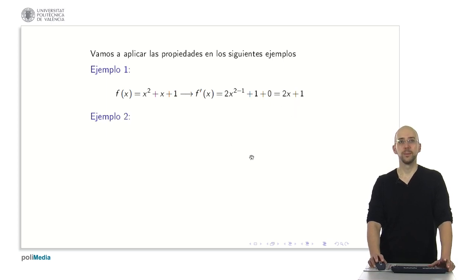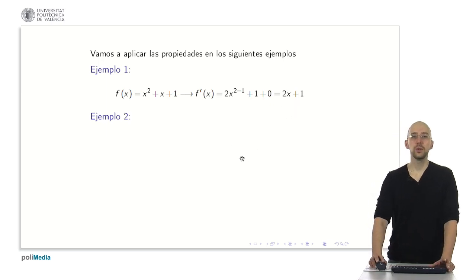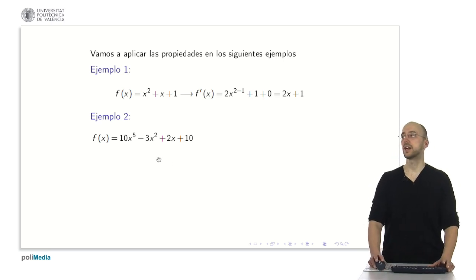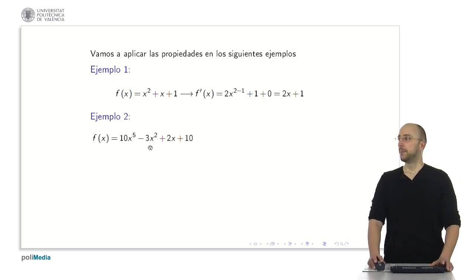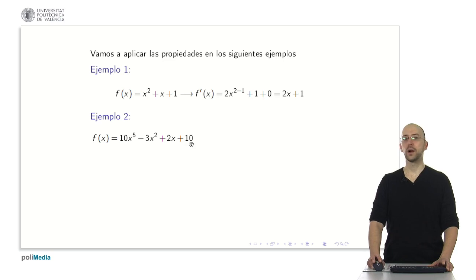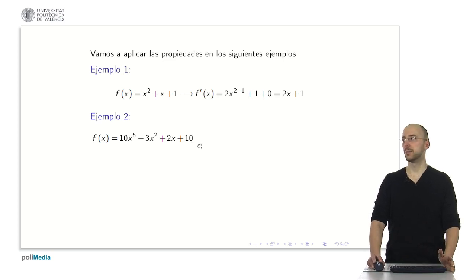Let's consider a polynomial of a higher degree: 10 times x to the fifth power minus 3x squared plus 2x plus 10. How many terms are involved? We have 4 terms. We differentiate by differentiating each of these terms.